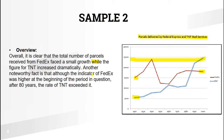The next sentence: 'Another noteworthy fact is that although the indicator of FedEx was higher at the beginning of the period in question...' — 'period in question' just means the period shown in the graph — '...after a number of years, the rate of TNT exceeded it.' So the red line was higher at the beginning, but they changed in different ways and eventually TNT overcame FedEx by the end of the graph.